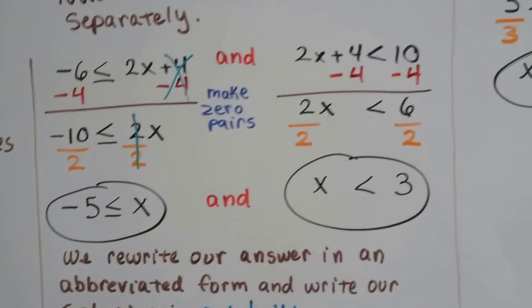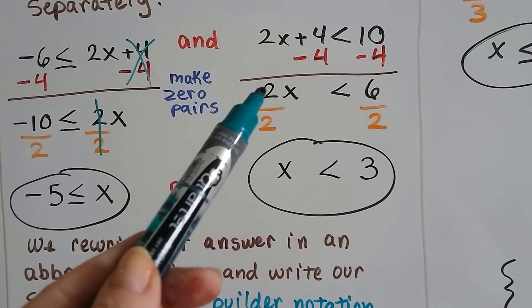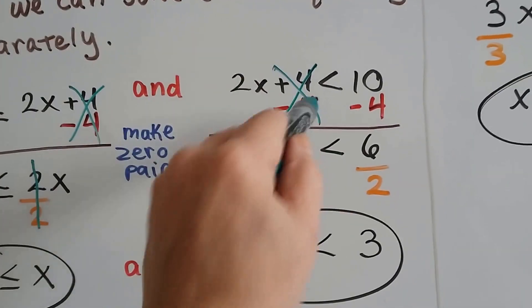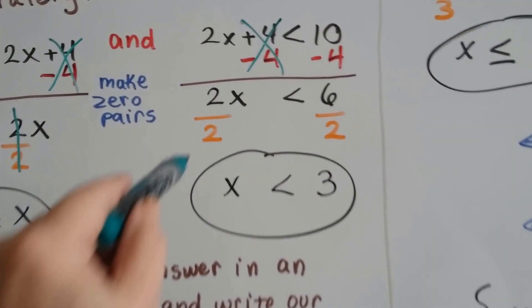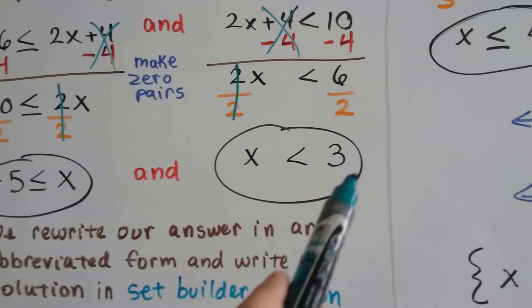Now we can do this side. We can take this 4 away from each side of this one also. And we get 2x is less than 6 because this created a zero pair. Now we divide each side by the coefficient 2, identity property, get our friend the invisible 1. We have x is less than 3.